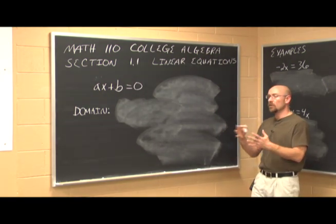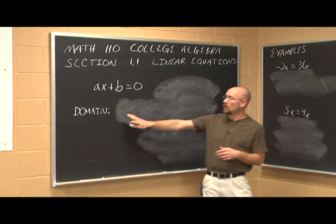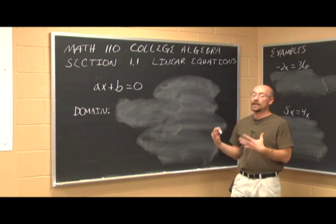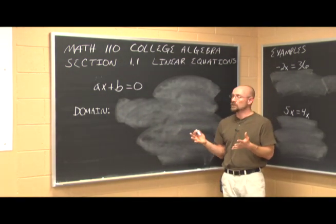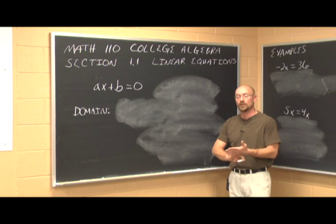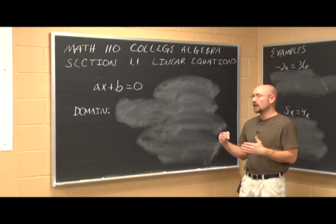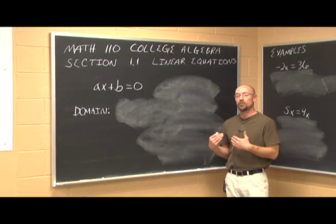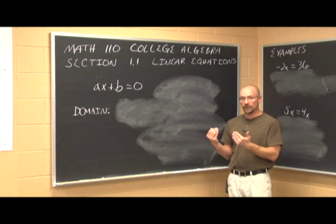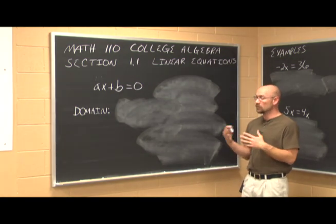If we have fractions, we want to multiply through by the LCD to every term to eliminate any fractions that may exist. We also want to identify the domain — the values of x that we cannot use. The two restrictions we look at are x's in denominators, since we can never divide by 0, and even-power roots like square root or fourth root, where the radicand cannot be negative.